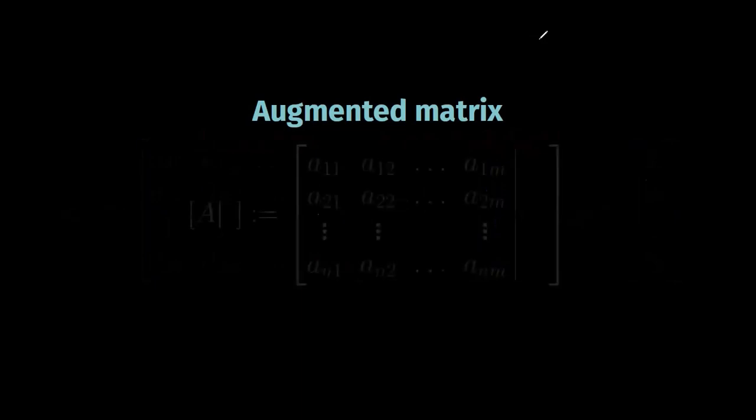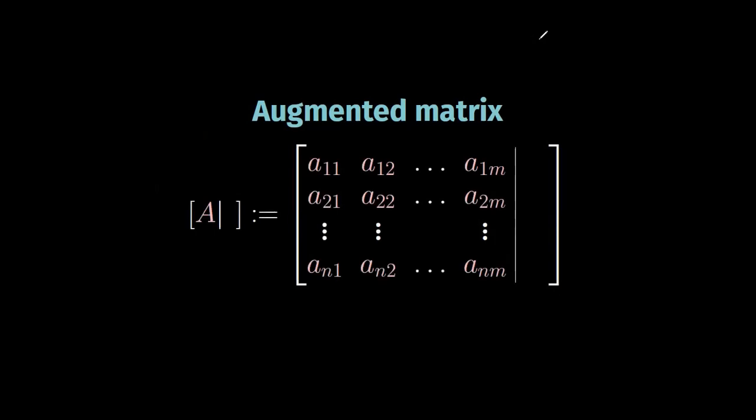Alternatively, if we want to use an even shorter notation, we can summarize all the data in a single matrix which we will call the augmented matrix of the system, or simply the augmented matrix. To the left we write the pink coefficients aij; to the right we write the green constant terms b1, b2, and so on. The vertical line between the pink and green coefficients is not strictly necessary, but it helps us remember that the left side corresponds to the left-hand side of the equations and the right side to the right-hand side.